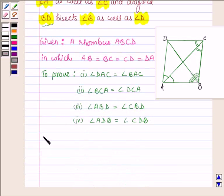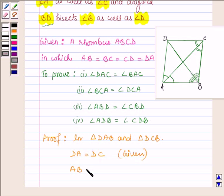So let us now begin with the proof. Now in triangle DAB and triangle DCB, side DA is equal to DC. And this is given to us. Also AB is equal to BC. This is also given to us. And DB is equal to DB. This is common to both the triangles.